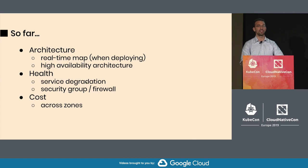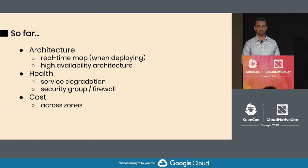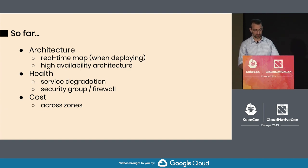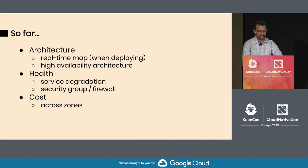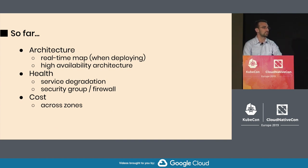To summarize so far, we've seen five use cases across three categories. For architecture: getting more confidence in your deployments and having a real-time view of your architecture, and understanding your high-availability architecture and load balancing. For health: you can see service degradation very quickly and understand security groups. For cost: you can see traffic across zones or regions. And you can do all of this with flow data.